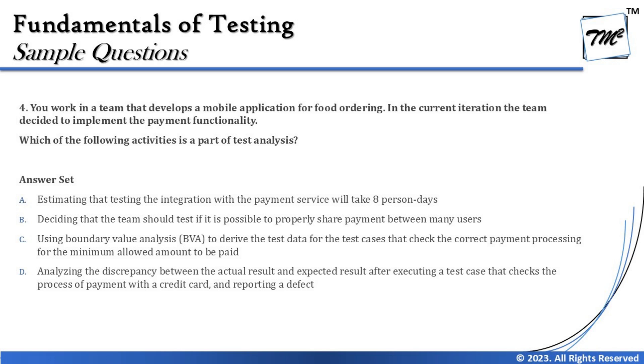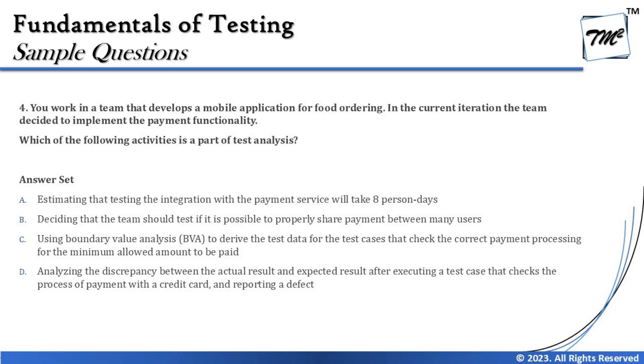In this question, the mobile application for food ordering is a diversion — you don't need to think about what food ordering has to do with the answer. The payment functionality is also a diversion, making you think about payment gateways, system integration, and so on. The question is very straightforward: what do you expect to do during test analysis?